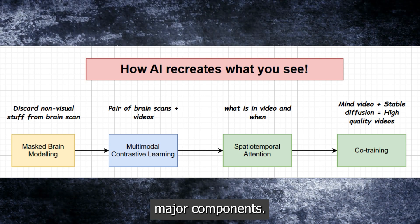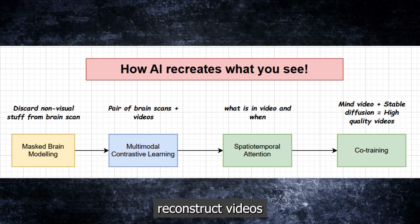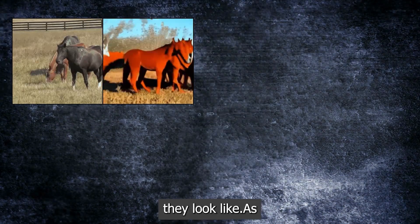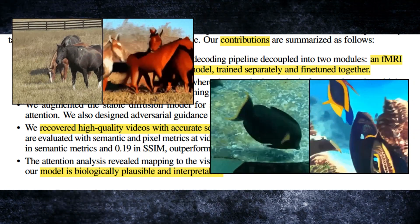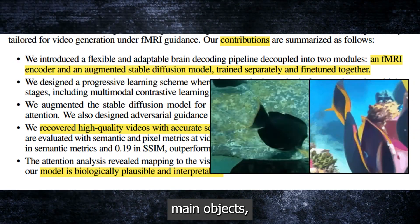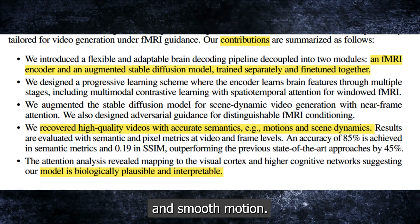So those are all the major components. Now, what are the results of Mind Video? How well can it reconstruct videos from brain activity? The researchers tested their model on a dataset of fMRI data and video frames from 10 different subjects who watched 18 different videos. The reconstructed videos are quite impressive and realistic — they capture the main objects, actions, and events in the original videos, and also have good resolution and smooth motion.